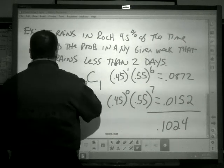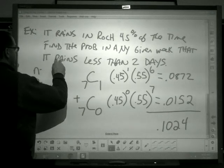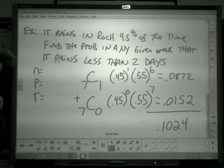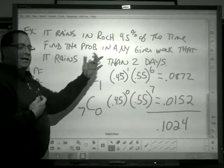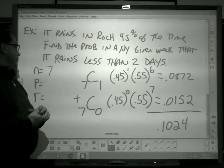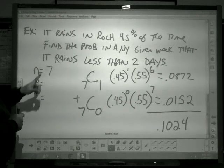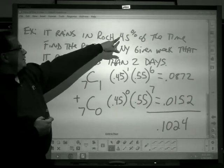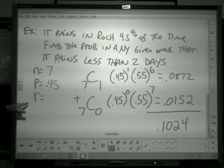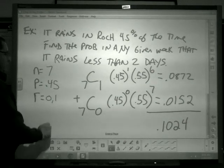It rains in Rochester 45% of the time. Find the probability in any given week. We have to identify n, P, and R. N, number of trials. It doesn't say how many days. Any given week, that's seven days in a week. So n is seven. Sometimes it might tell you specifically how many trials, sometimes you've got to figure it out from the problem. Probability of success: what do I want it to do? It rains 45% of the time. I convert that to a decimal, P = 0.45. And less than two days, that would be no days or it could be one day.